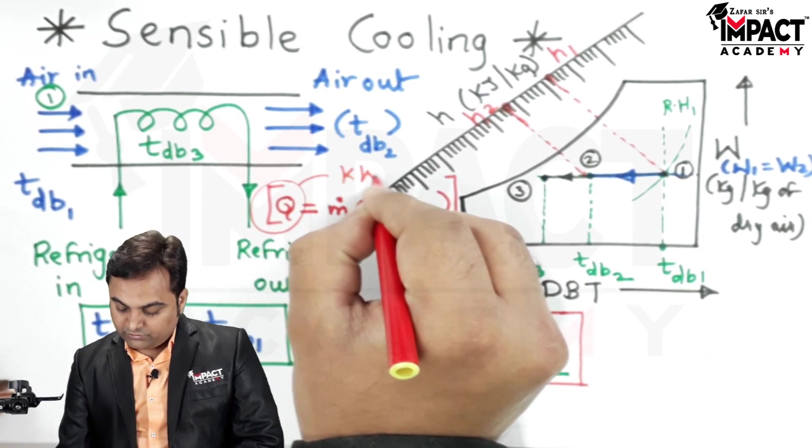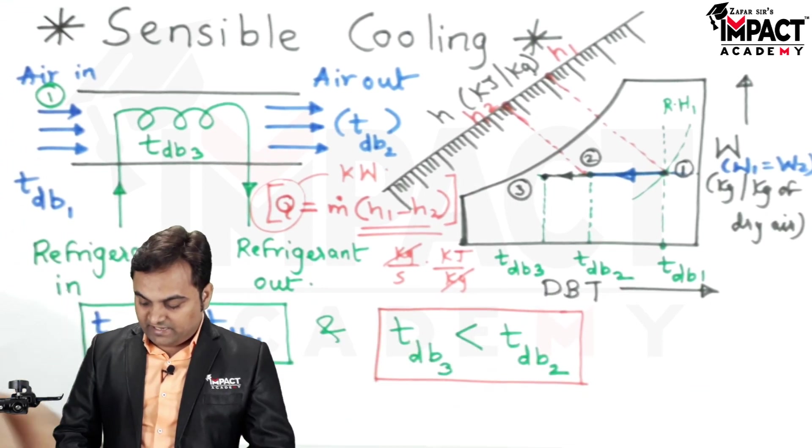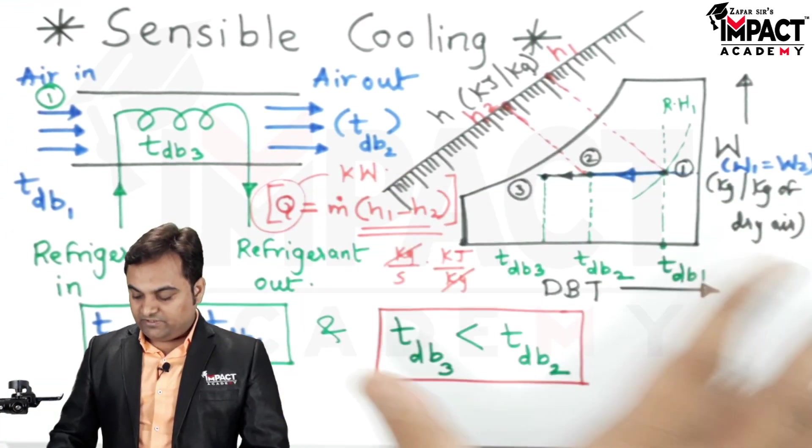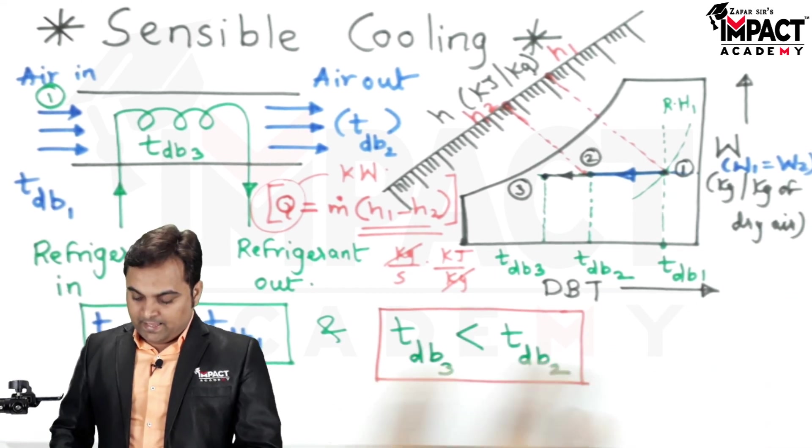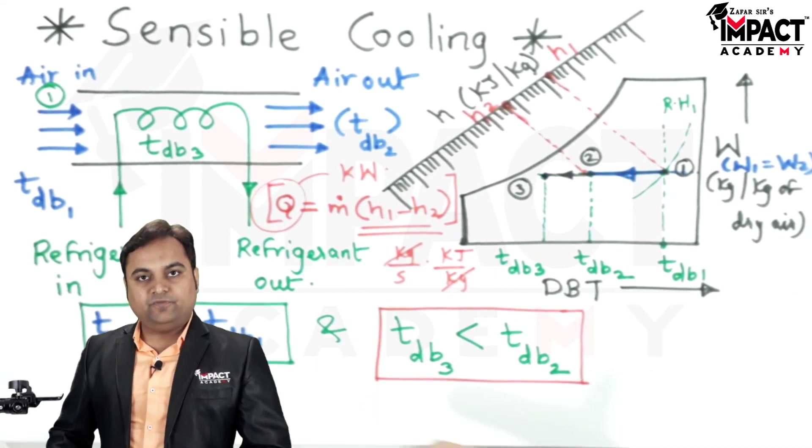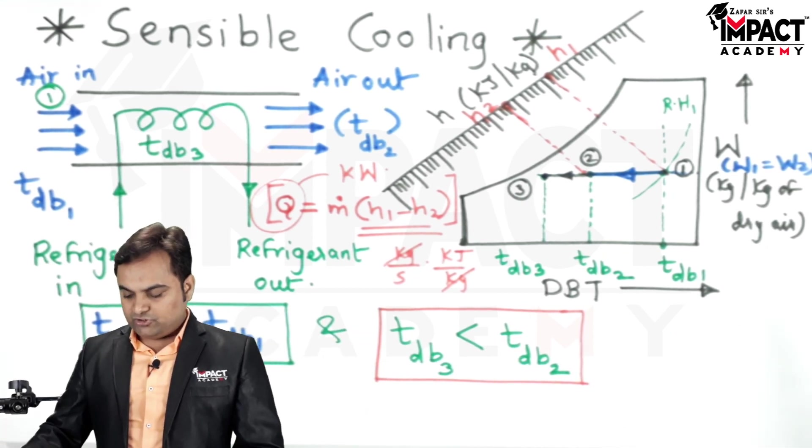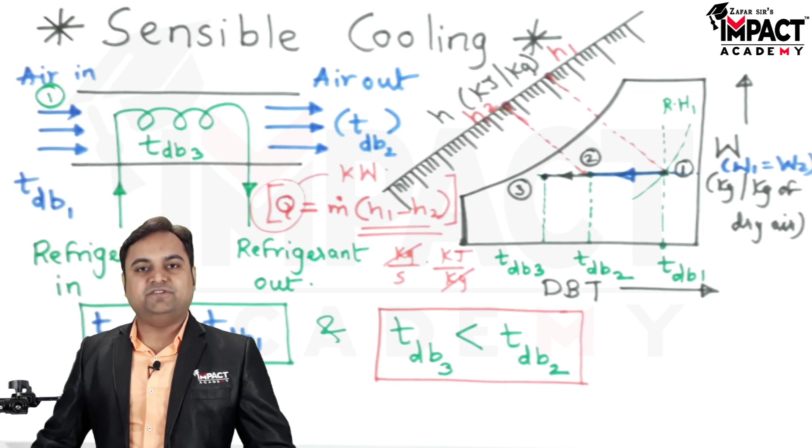So in this way we can calculate the amount of heat removed from a given amount of air by using the psychrometric chart, and with the help of problems we can finally understand with the values how to solve such problems. So in short that was a video regarding sensible cooling.